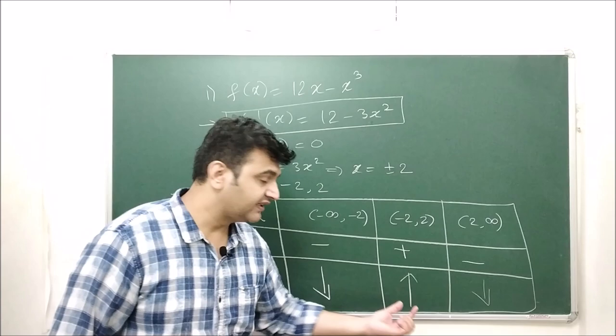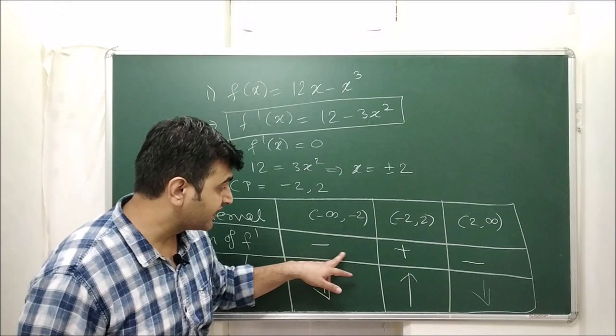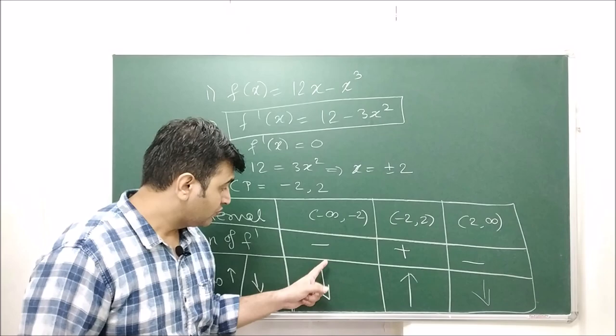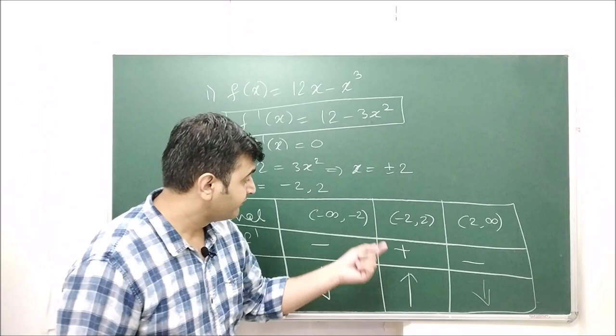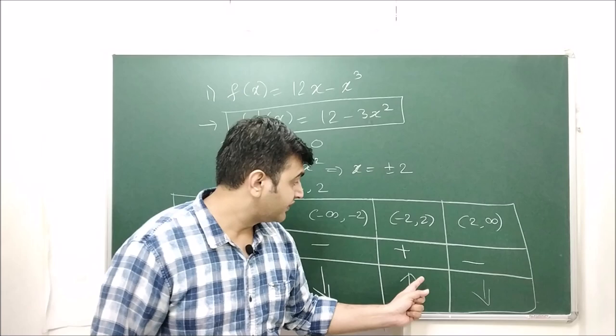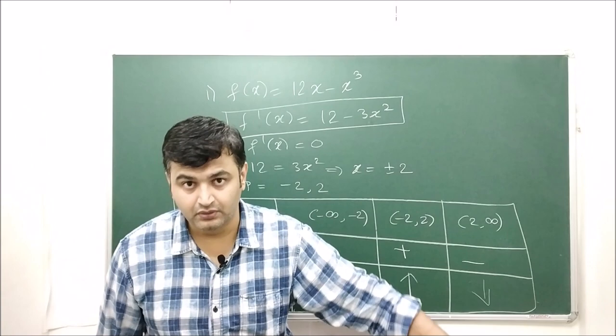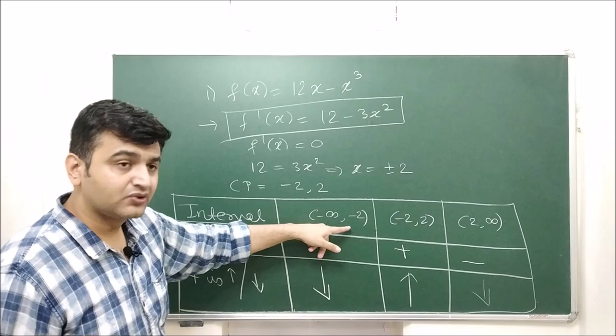Now for the third question — local maxima or minima? At x = minus 2, the sign of f′ changes from negative to positive, so at minus 2 you have a local minimum value. At x = 2, the sign changes from positive to negative, so at x = 2 you have a local maximum value. To find the actual values, compute f(−2) for the local minimum value and f(2) for the local maximum value.